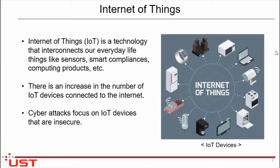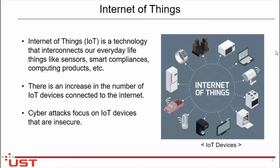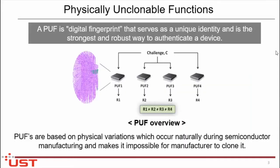Today I'm going to start with the Internet of Things. As we all know, the Internet is open to access, and most IoT devices are accessible through the Internet. Internet is a technology that interconnects our everyday life, like sensors, mobile phones, and computer devices. There are a variety of IoT security concerns, and the number of cyber attacks also focuses on these insecure devices. If you want to exchange data through devices, we need those devices to be authenticated, secure, and reliable. One good approach to enhance security capabilities is to utilize the Physically Unclonable Function, that is PUF.